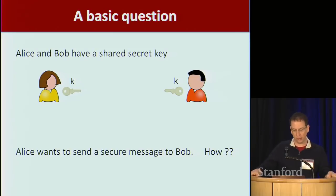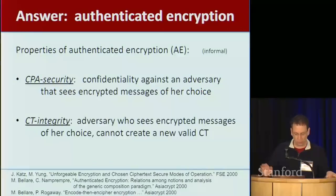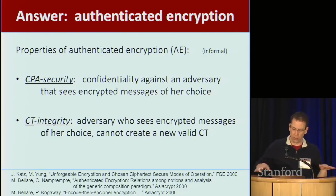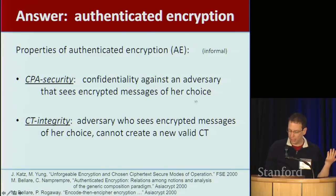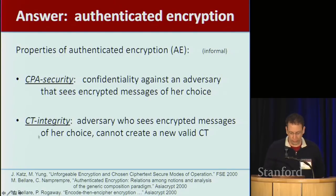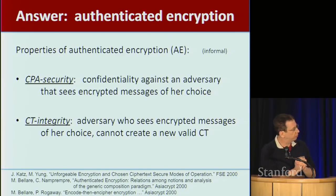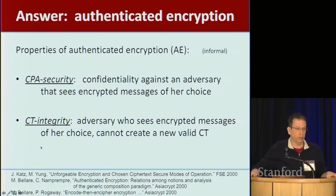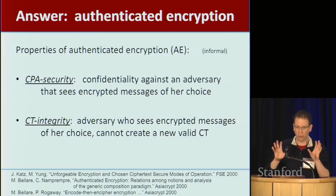You ask people how do you do this, and you'd be amazed at how many different answers you get. The correct answer is this notion called authenticated encryption, which takes a bit of work to define precisely. But informally, authenticated encryption means the following: there should be some notion of confidentiality, so an adversary who sees many messages can't figure out any information about plaintext for messages of her choice. And there has to be a notion of integrity, which says that even if the adversary can see lots of messages that Alice sends to Bob, she cannot change the data embedded in these messages. So one is confidentiality, the other is integrity.